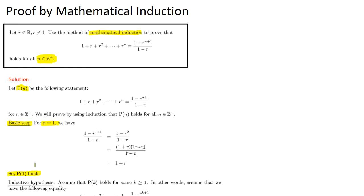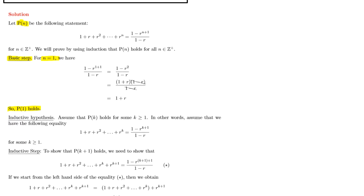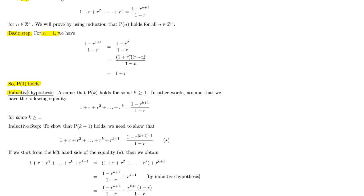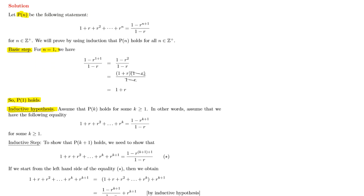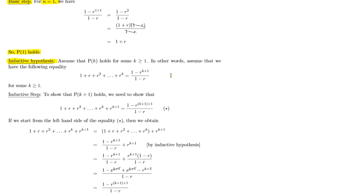So if P(1) holds, does that mean any value of n holds? That is what we address in the inductive hypothesis step. We assume that P(k) holds for some value k which is greater than or equal to 1. In other words, we assume this equation — the same equation as the one in the question but with n replaced by k — and we write it out. This assumption is very important and we will use it later on.